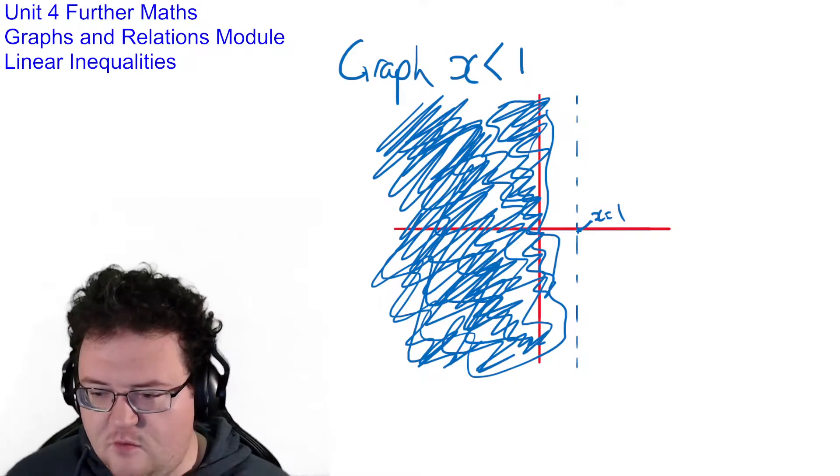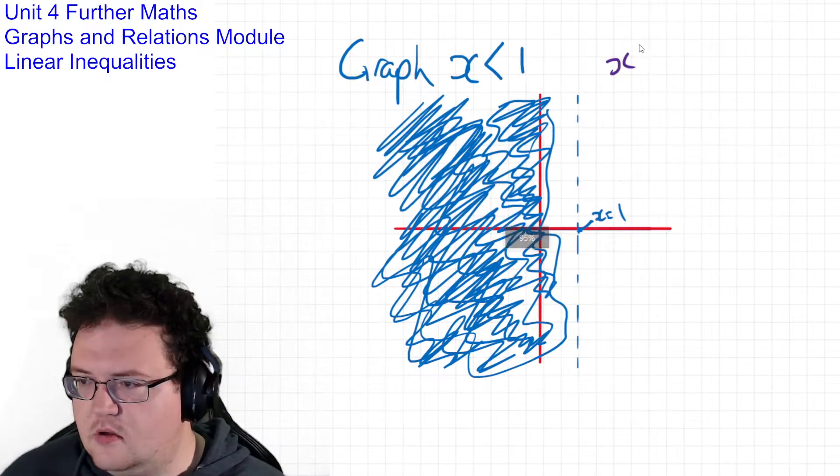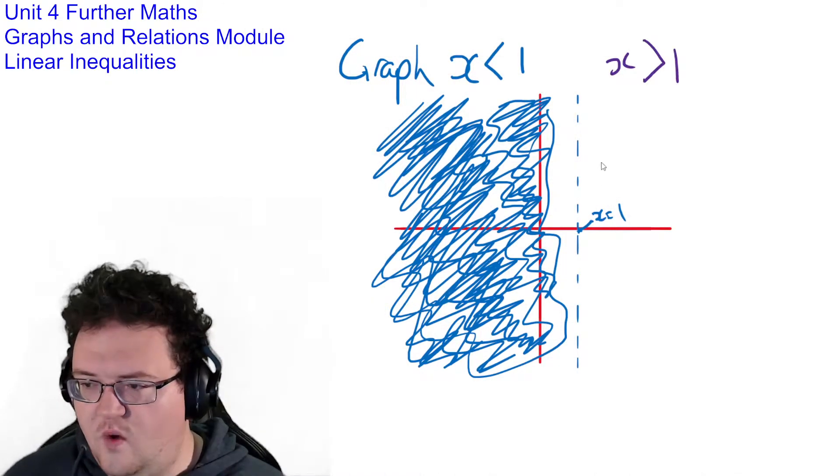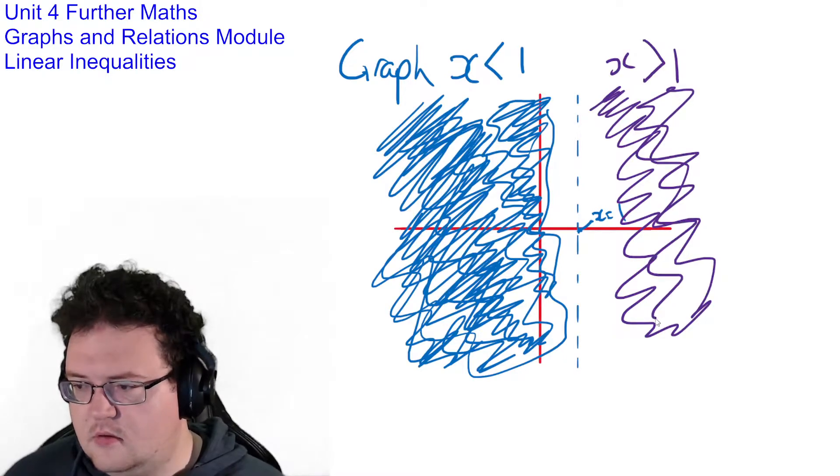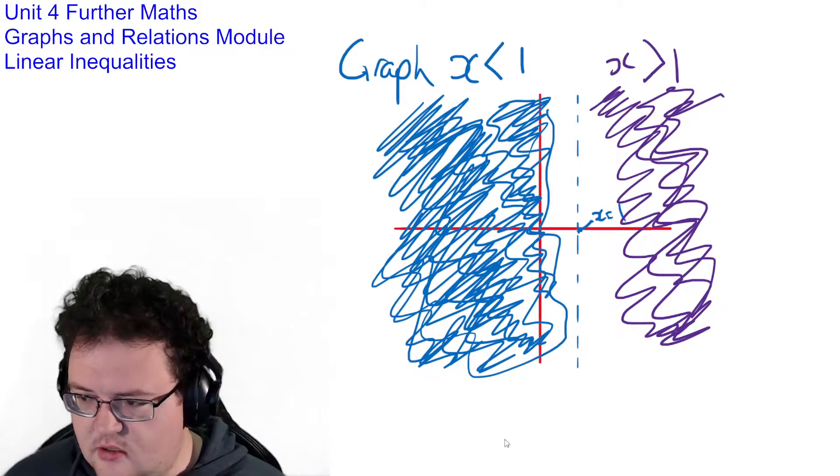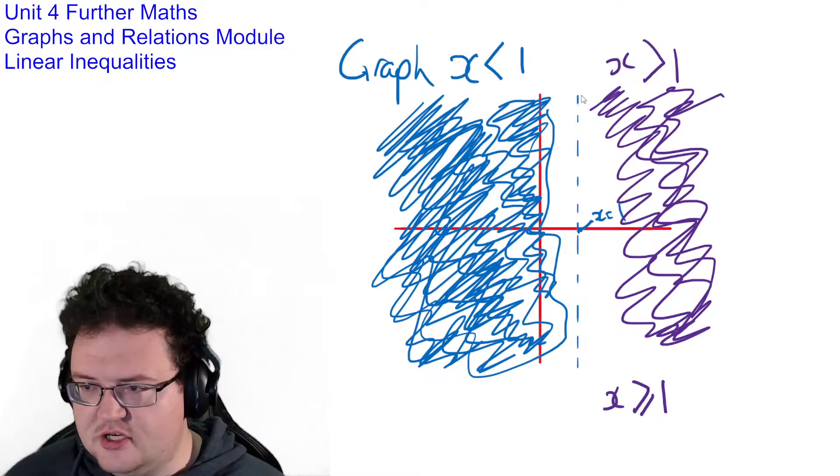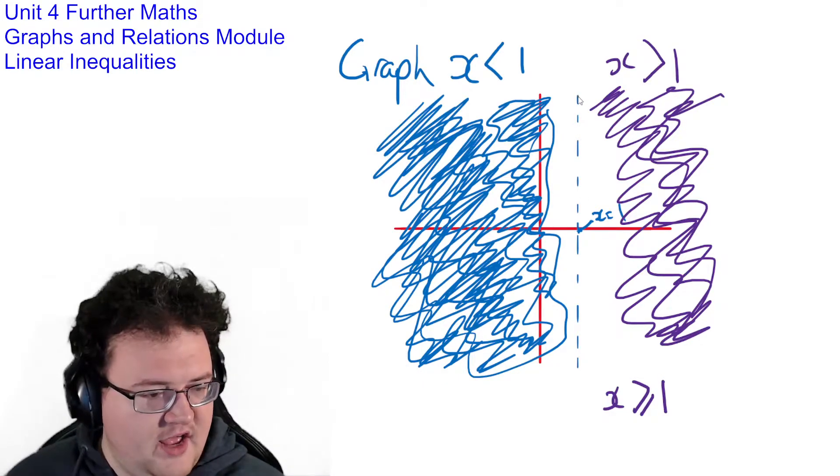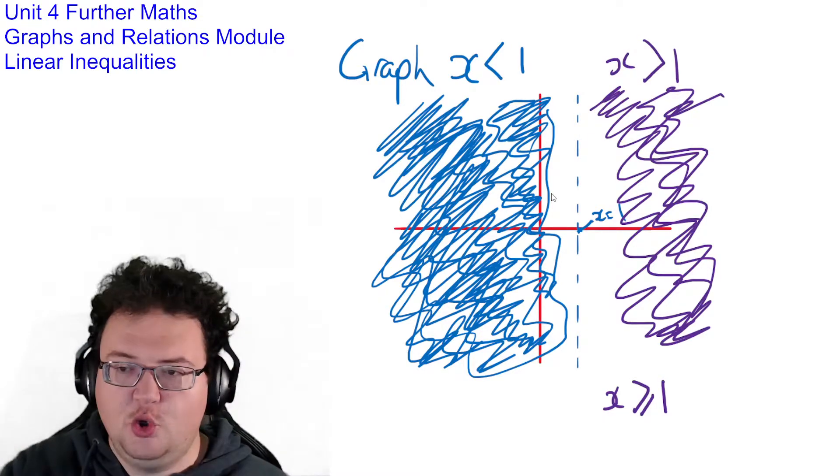Now if it was the other way around and it was x is greater than 1, then I would be shading the other side instead. If it was x is greater than or equal to 1, then instead of a dotted line here I would have a solid line. Because a solid line means you are including that as well.